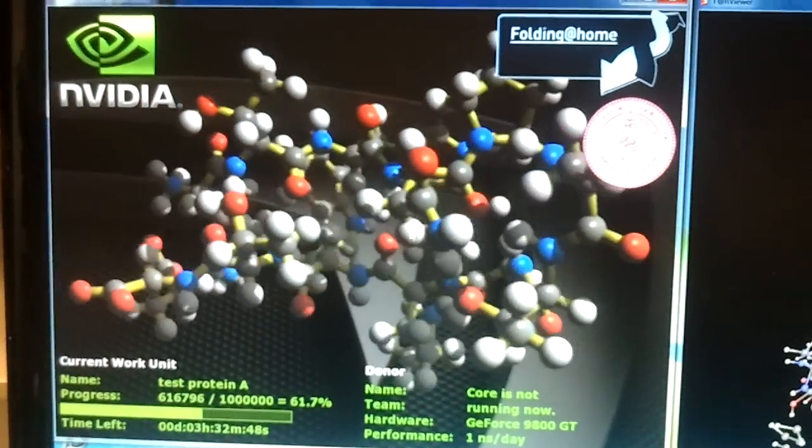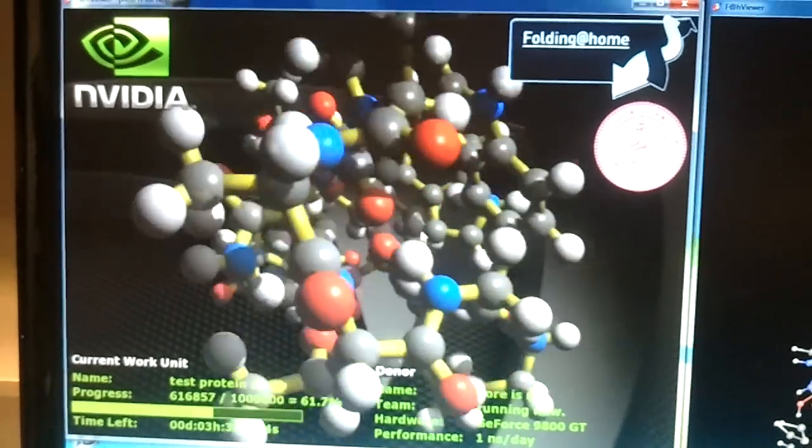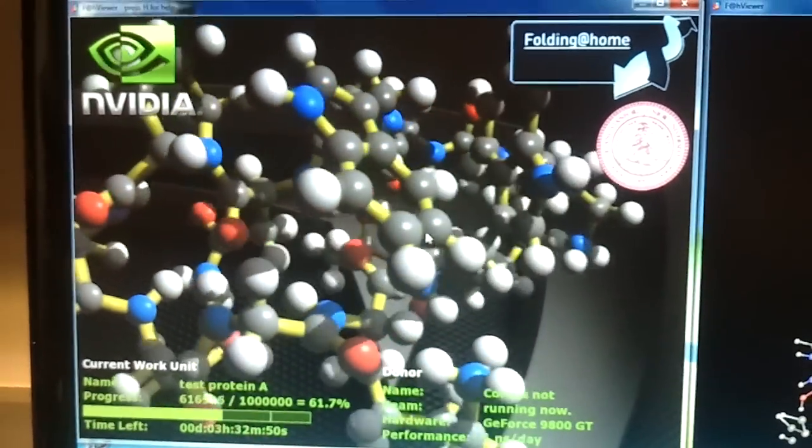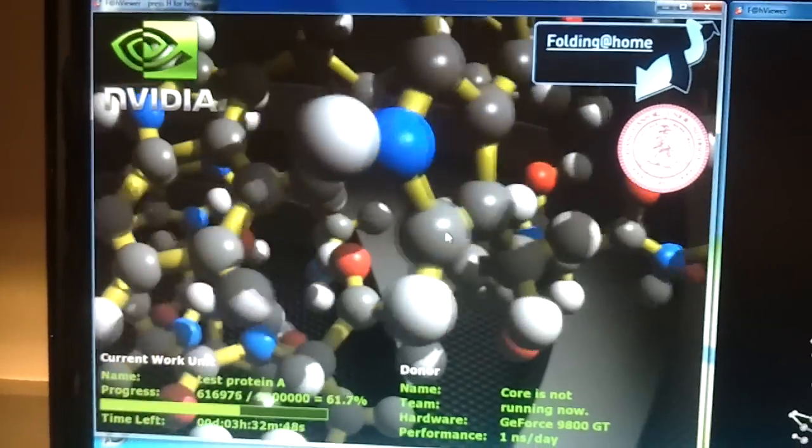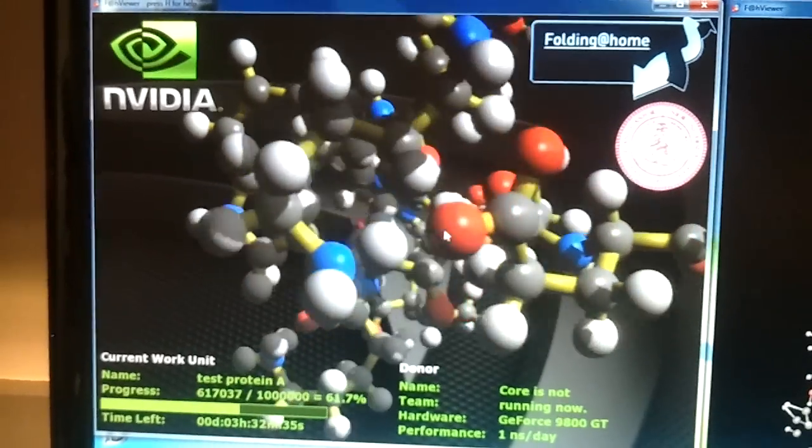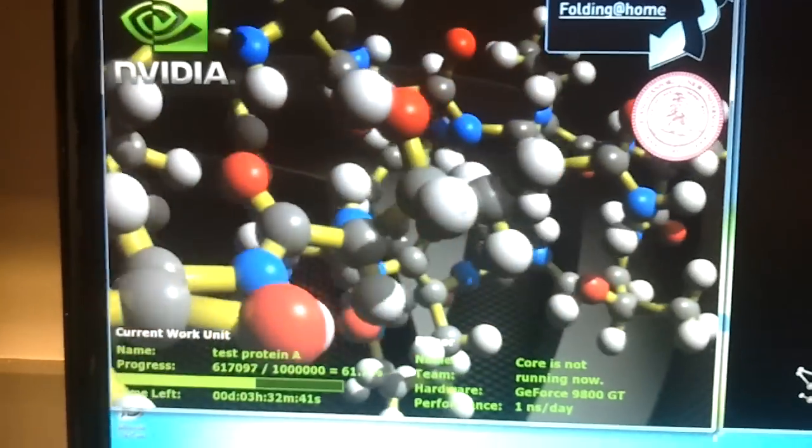The various balls here, the different colors are different elements. So I think yellow is sulfur, the dark grays could be hydrogen, blues are nitrogen, and so on.